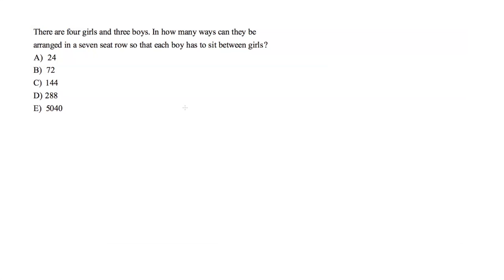There are four girls and three boys, and how many ways can they be arranged in a seven-seat row so that each boy has to sit between a girl?